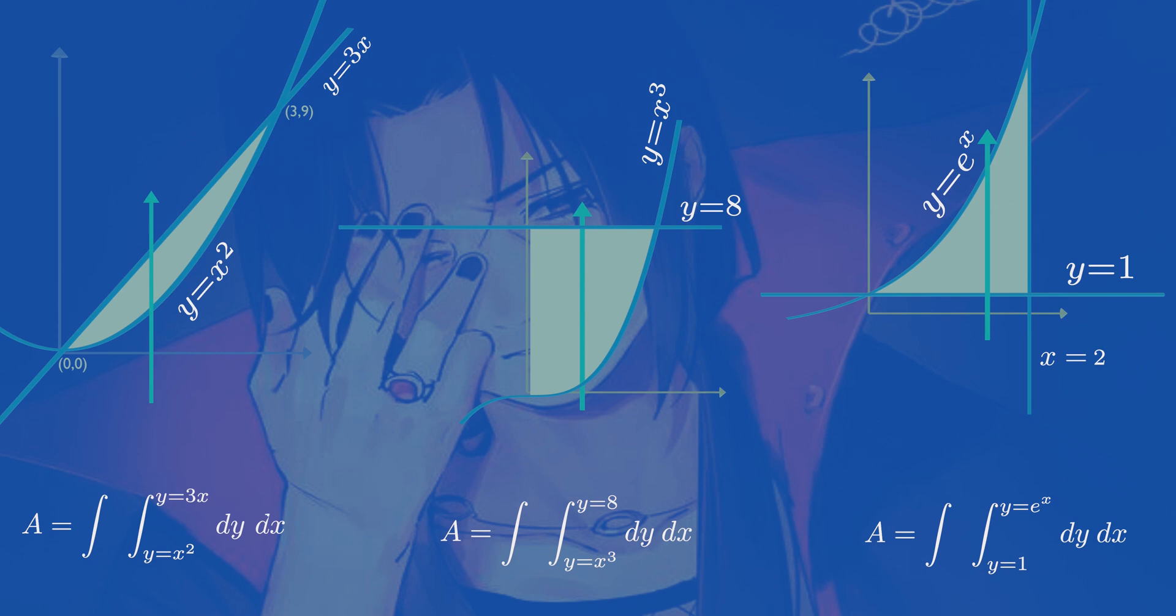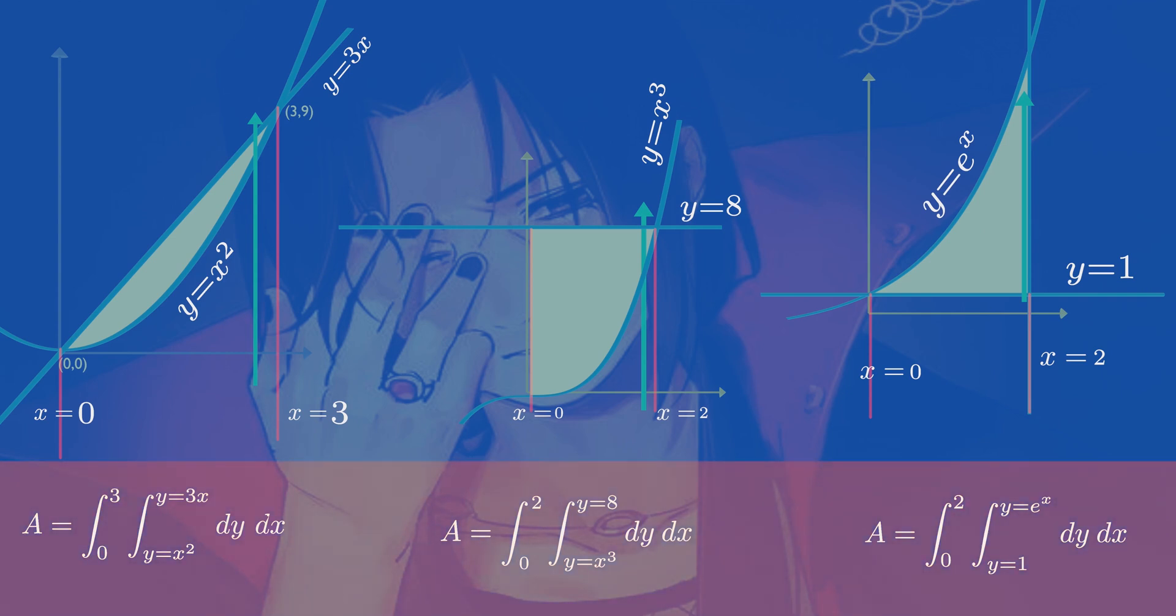Now choose x limits that include all the vertical lines. These points are the x limits of integration. Finally, solve them to get the area.